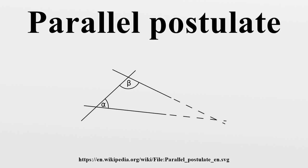There exists a pair of straight lines that are at constant distance from each other. Two lines that are parallel to the same line are also parallel to each other. In a right-angled triangle, the square of the hypotenuse equals the sum of the squares of the other two sides. There is no upper limit to the area of a triangle.